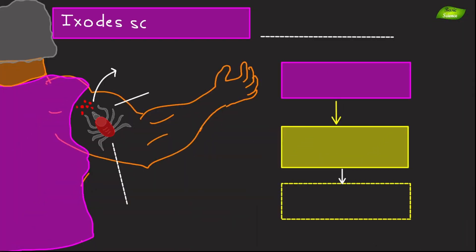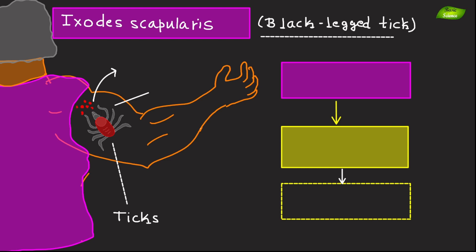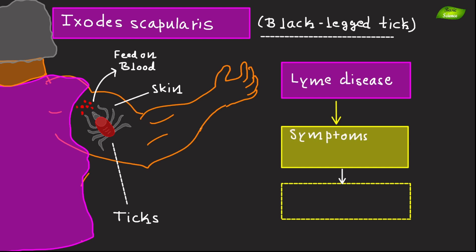Ixodes scapularis, the black-legged tick, attaches to the skin and feeds on blood. These ticks are known vectors of Lyme disease, causing symptoms like fever, fatigue, and a characteristic bull's-eye rash.